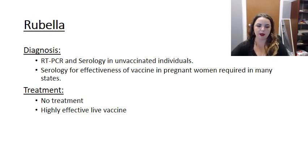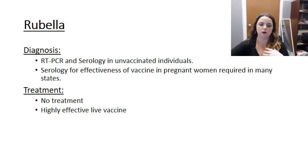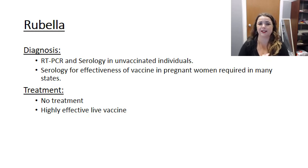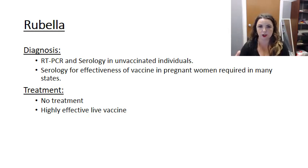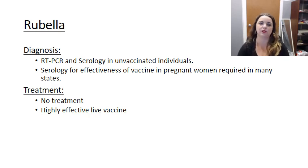That's all about rubella. We'll talk about varicella and other TORCHES infections in separate videos. The TORCHES infections include: T for toxoplasma, O for 'other' (which includes Zika, parvovirus, and varicella), R for rubella, C for CMV, H for herpes, and S for syphilis. That acronym is used to discuss infections that tend to lead to significant congenital morbidity or mortality.